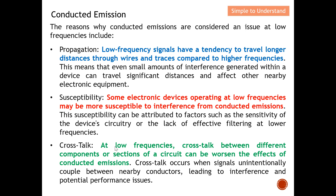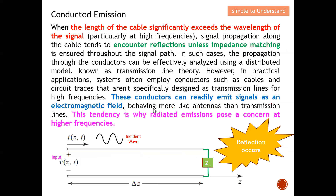Crosstalk at low frequency between different components or sections of a circuit can be worse due to conducted emission. Crosstalk occurs when a signal unintentionally couples through capacitive coupling onto a nearby conductor, and the interference still stays within the conductor of the cable — so this is also classified as conducted emission.